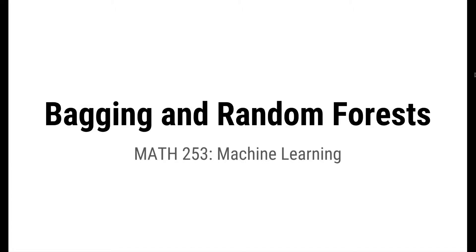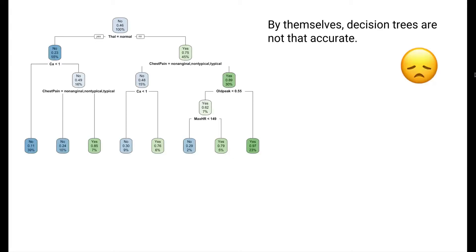In this video, we'll look at two improvements to trees called bagging and random forests. So first off, why would we even want to consider improvements to trees? Aren't trees awesome? Well, they are. They're very interpretable. But it turns out that decision trees by themselves aren't super accurate.